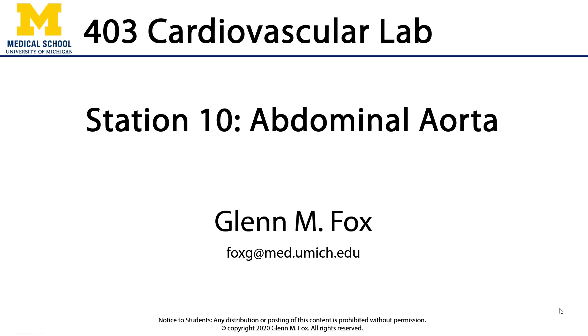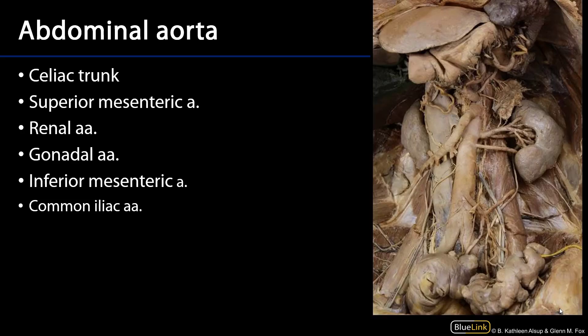Let's talk about the abdominal aorta. The abdominal aorta is the part of the descending aorta that is inferior to the diaphragm. It runs posterior to the diaphragm at the level of about T12 and it terminates at about the level of L4 into the common iliac arteries.